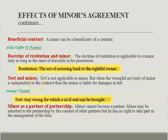The next point is tort and minor. A tort means any wrong for which a civil suit can be brought. A minor is not liable either for breach of contract or for damages on account of tort or fraud. In other words, tort is not applicable to a minor. However, when a wrongful act or tort is independent of the contract, then a minor is liable for damages in tort.